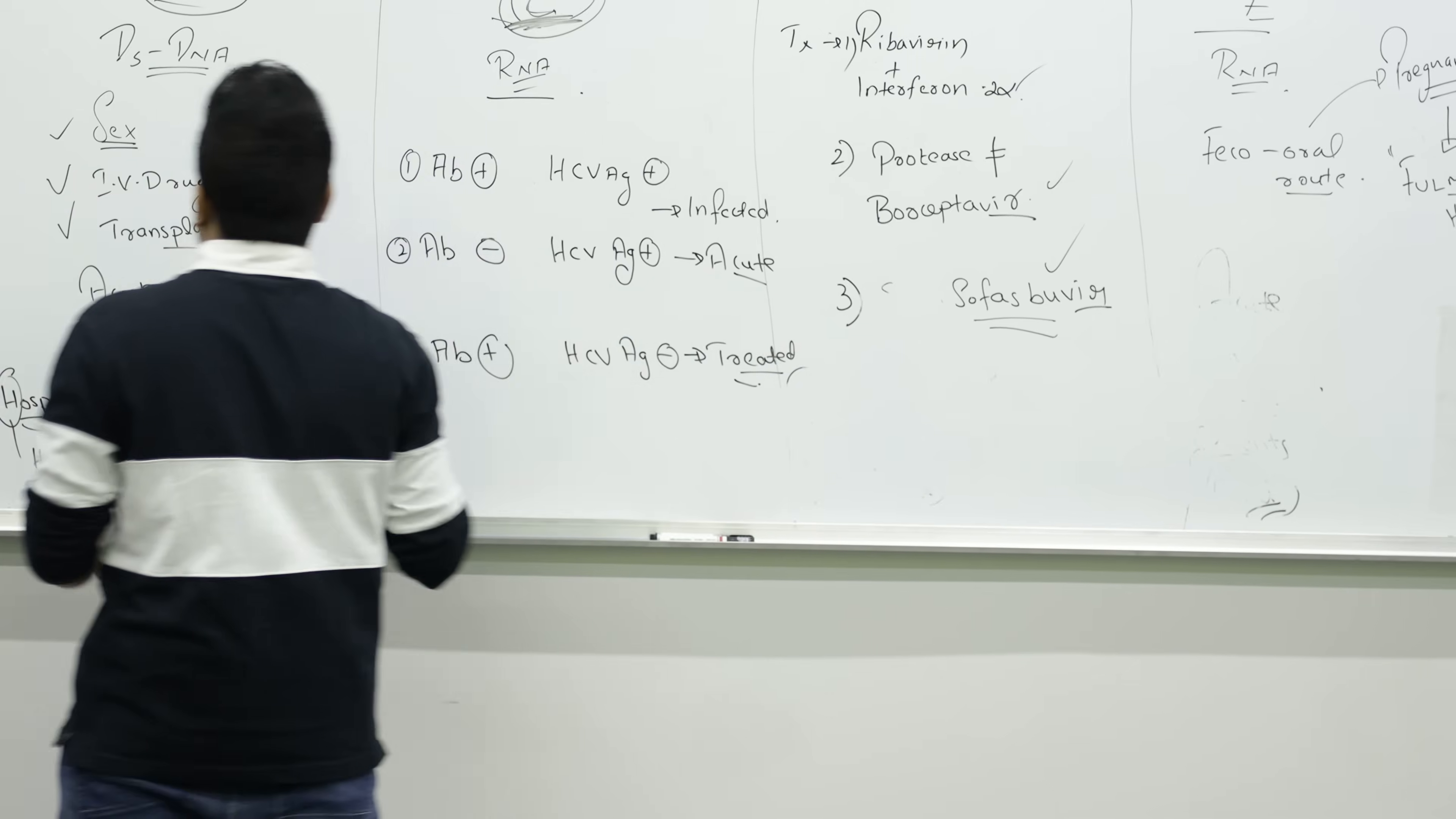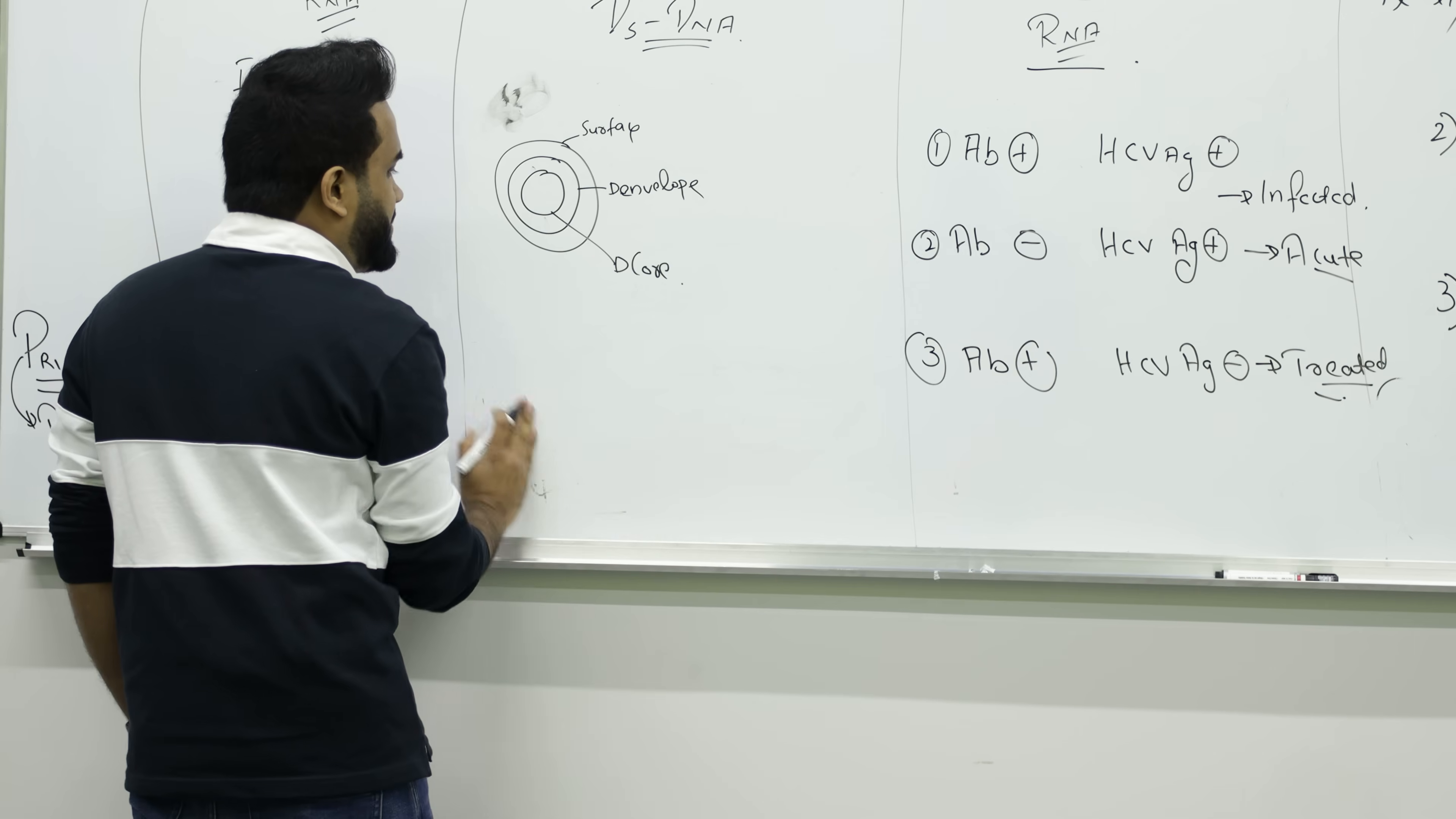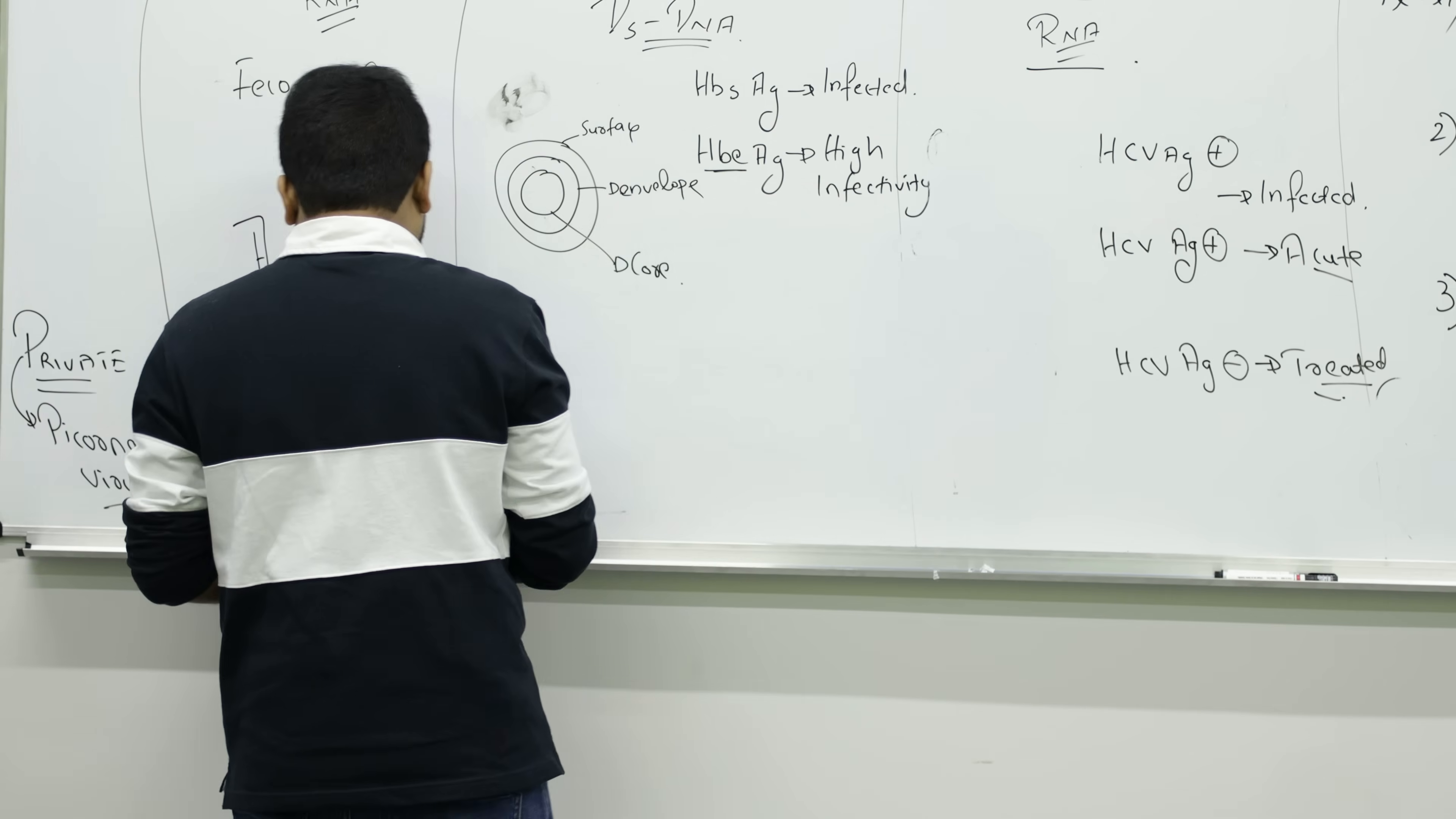Let's talk about hepatitis B. We have markers to diagnose hepatitis B also. Hepatitis B is made up of three things: core, envelope, and surface. In any exam, if they're giving that you check the blood and see HBsAg surface antigen, it means the patient is infected. If they're giving HBeAg envelope antigen, very important, high infectivity is happening. Body can't control it.